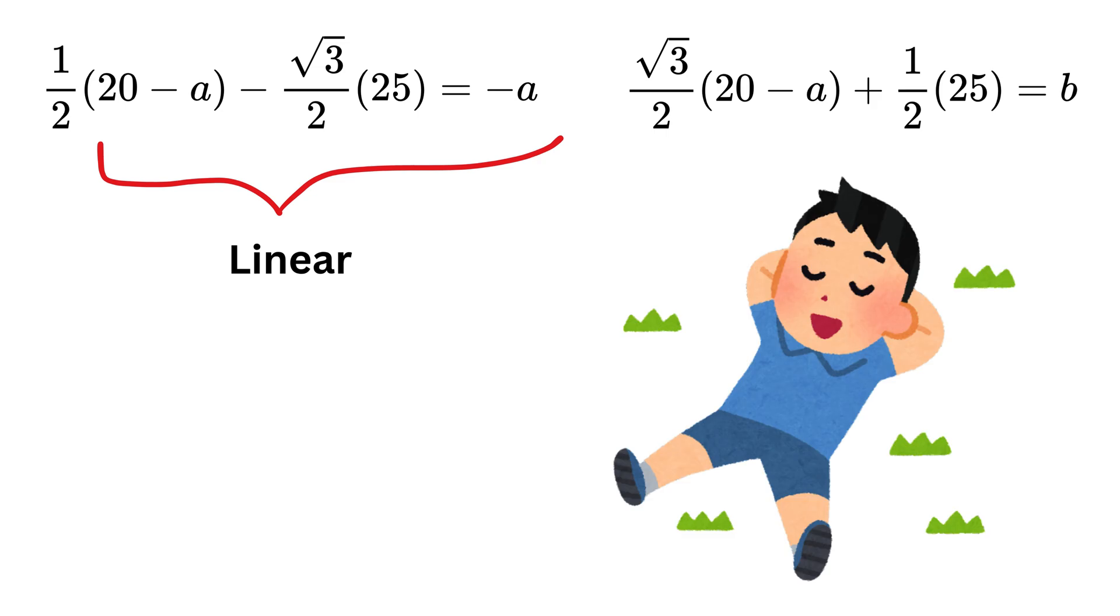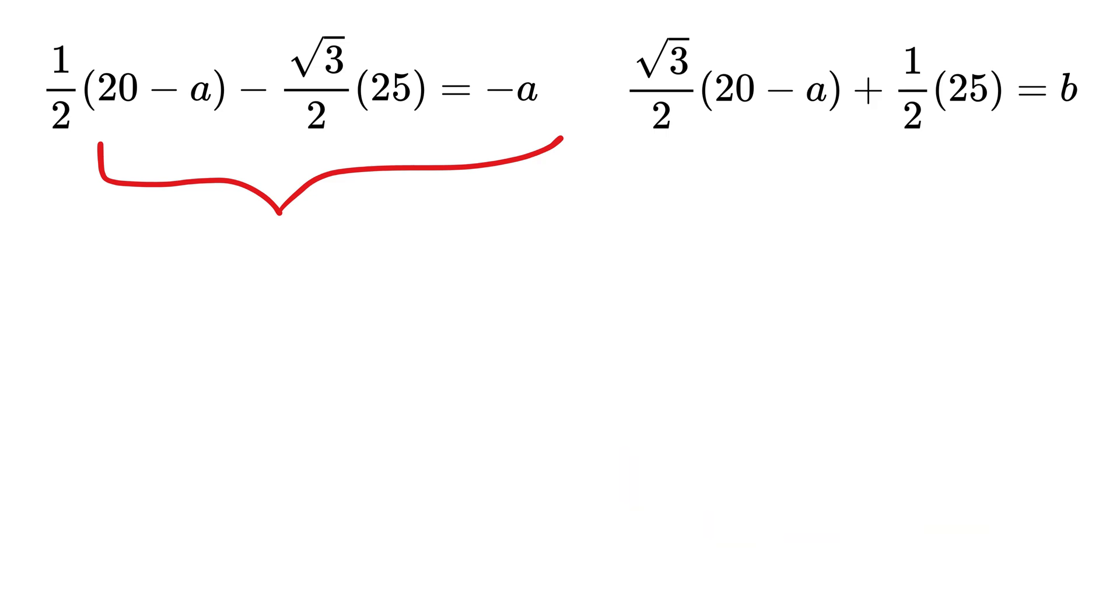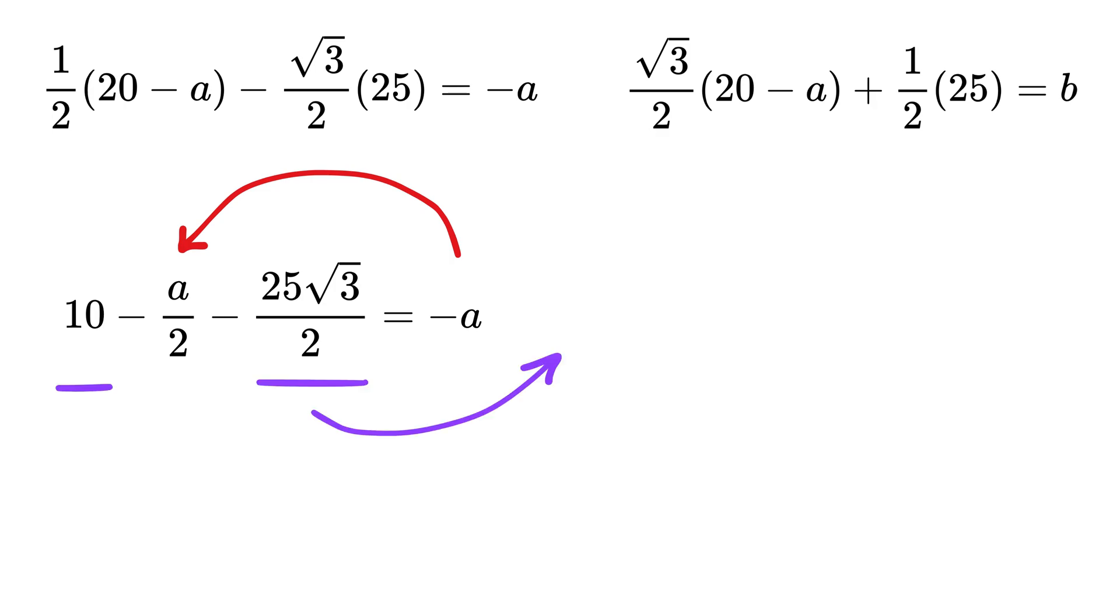So, how cleverly we have reduced the quartic equation to a linear equation in a. This becomes (1/2)(20-a) - (√3/2)(25) = -a. Take -a here and this thing here to get a - a/2 = 25√3/2 - 10, which becomes a/2 = 25√3/2 - 10.